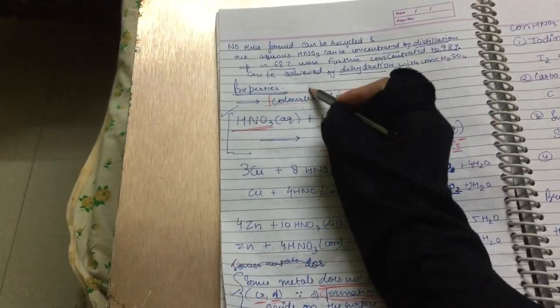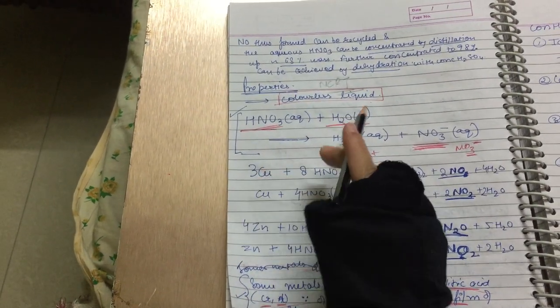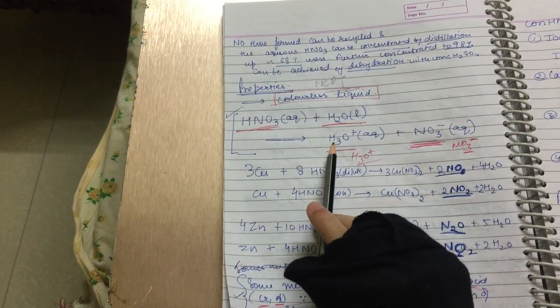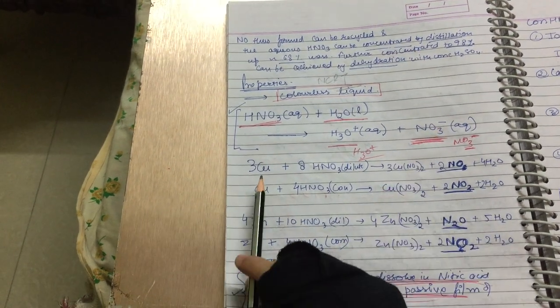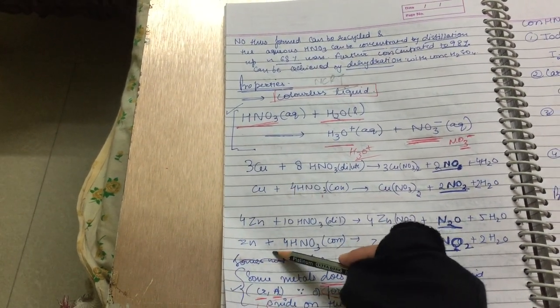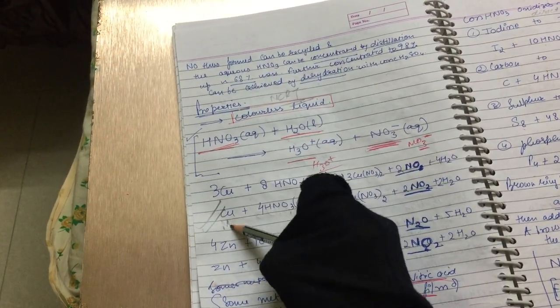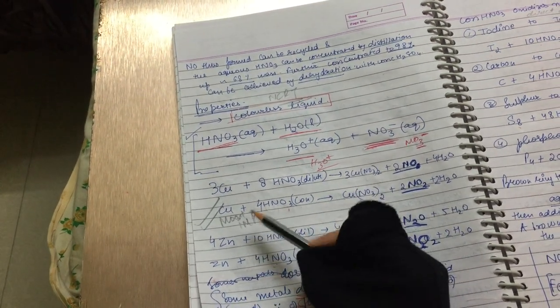When you look in the NCERT book, you will find the properties like what is the reaction with water. When HNO3 reacts with water, HNO3 becomes HNO3 minus. Then with copper and zinc it is a little confusing, but you should definitely know that. These are very most important, in fact, because it is very confusing.